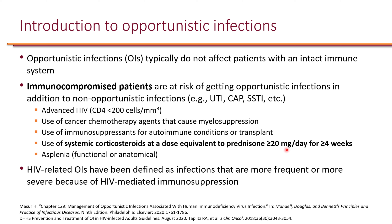HIV-related opportunistic infections do not behave clinically exactly like opportunistic infections seen in other immunosuppressed populations. For example, toxoplasmosis in HIV manifests mainly as encephalitis, whereas in cancer or organ transplant patients, it is more likely to be visceral or disseminated disease. Pneumocystis pneumonia is far more likely in HIV patients, yet the same organism often causes indolent disease in other immunosuppressed patients.